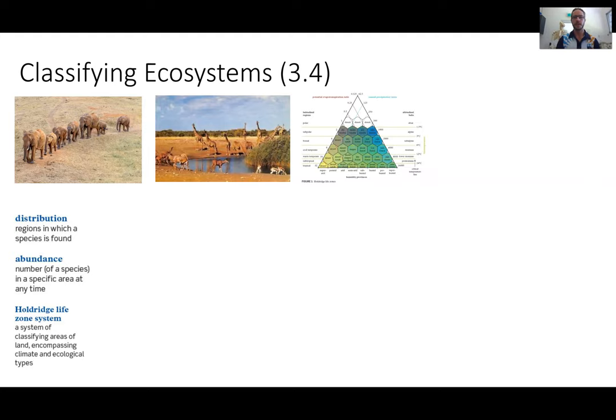The way that ecosystems can be defined is quite fluid and it depends on how much we either zoom in or zoom out. And there's various models that provide us with a framework to be able to classify ecosystems. One from the textbook is the Holdridge Life Zone System and it looks at climate, weather, precipitation, soil levels to give us an indication of the area that we're looking at.